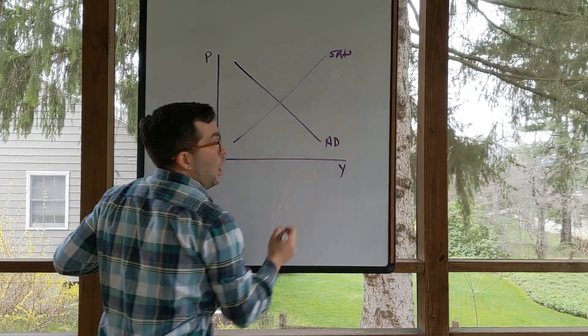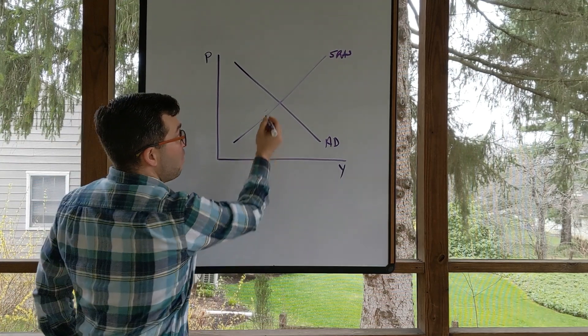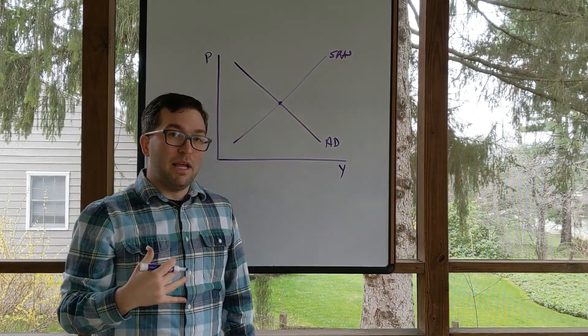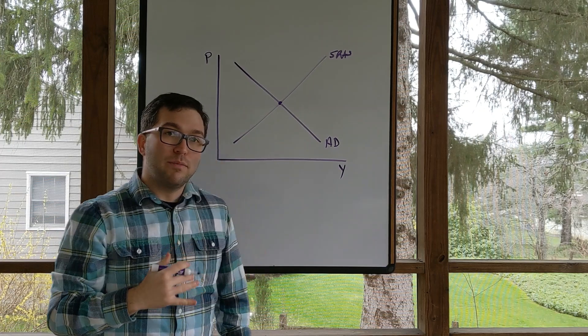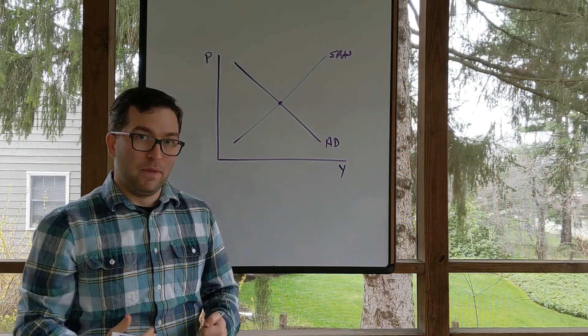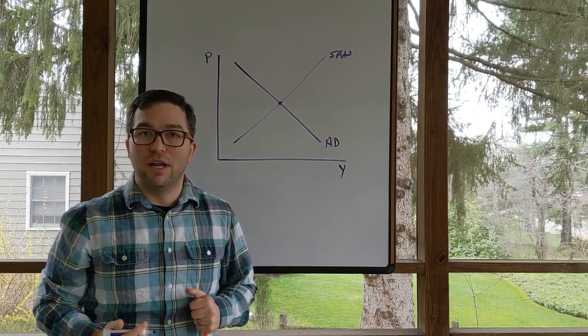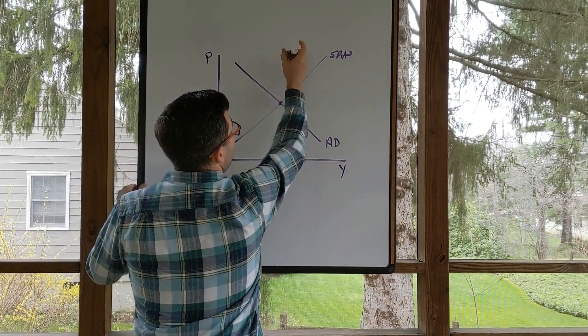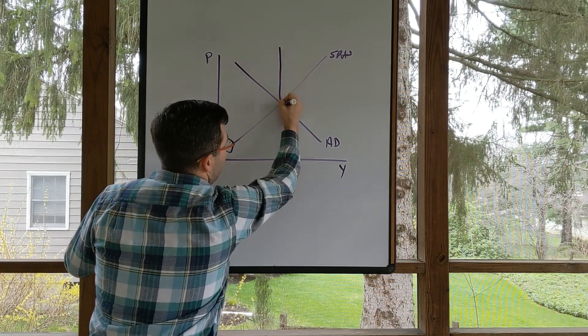This point where aggregate demand and short aggregate supply cross, that's always going to be a short-run macroeconomic equilibrium, no matter where long-run aggregate supply is. If we put long-run aggregate supply right through that exact same point...